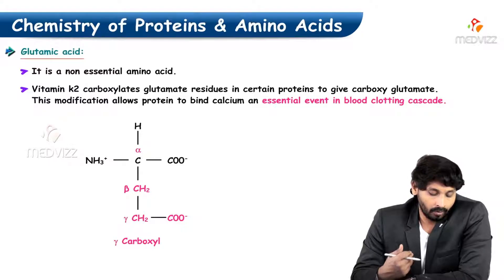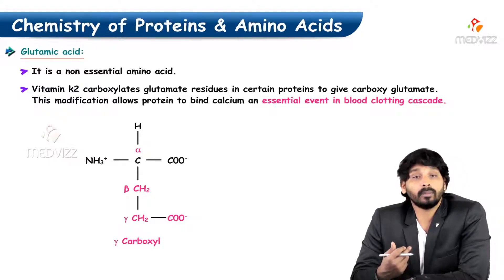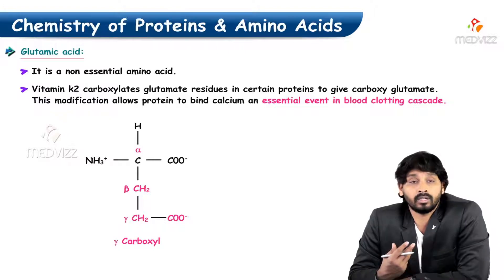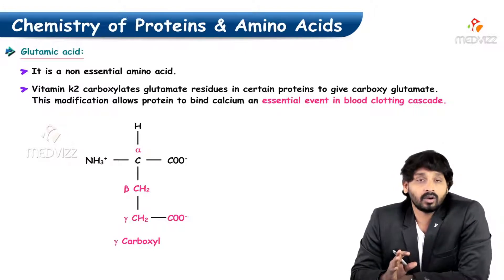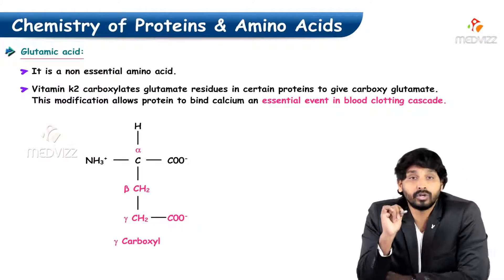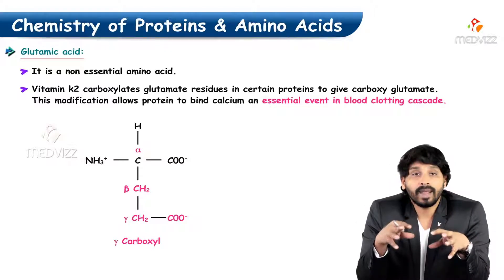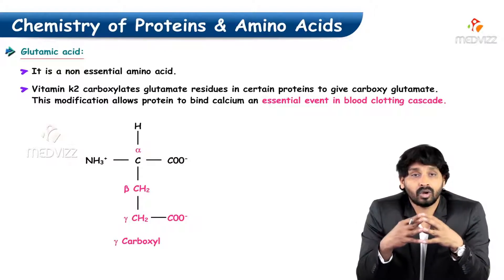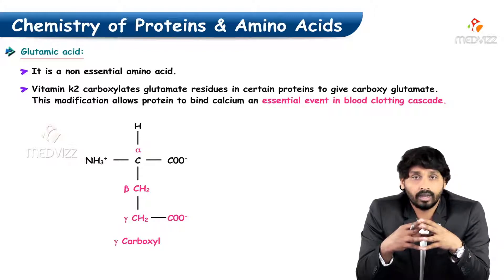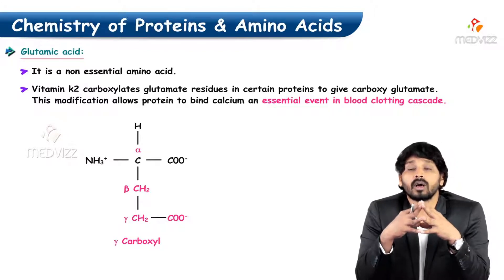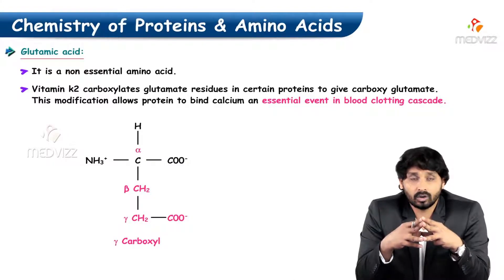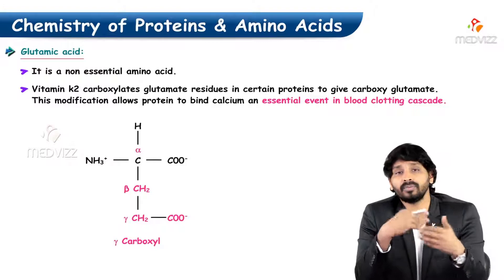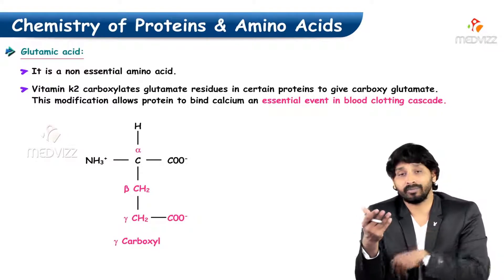Glutamic acid requires Vitamin K2. Vitamin K2 is helpful in coagulation of blood. Vitamin K2 carboxylates glutamate residues, meaning glutamate plays a major role in coagulation along with Vitamin K. Together, glutamate and K2 form carboxy glutamate, and this modification allows the protein to bind calcium.